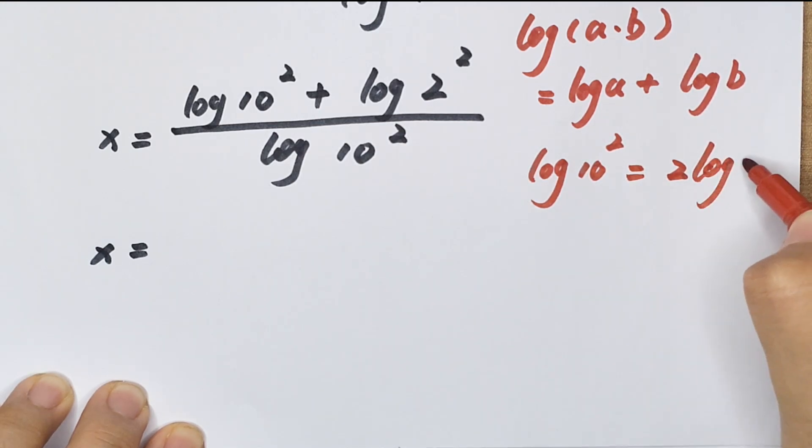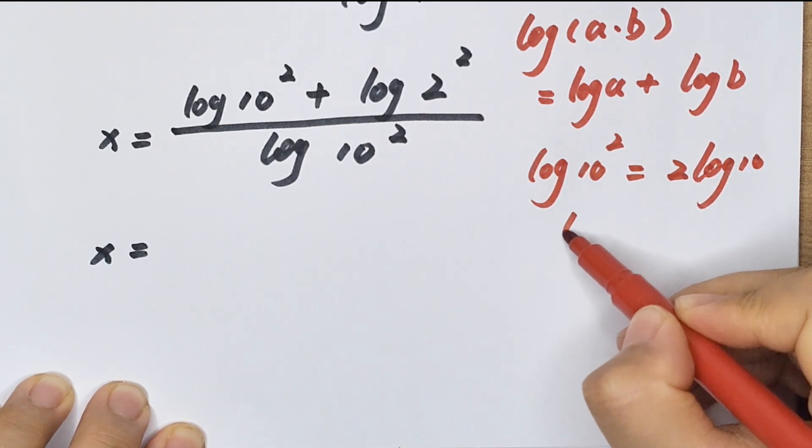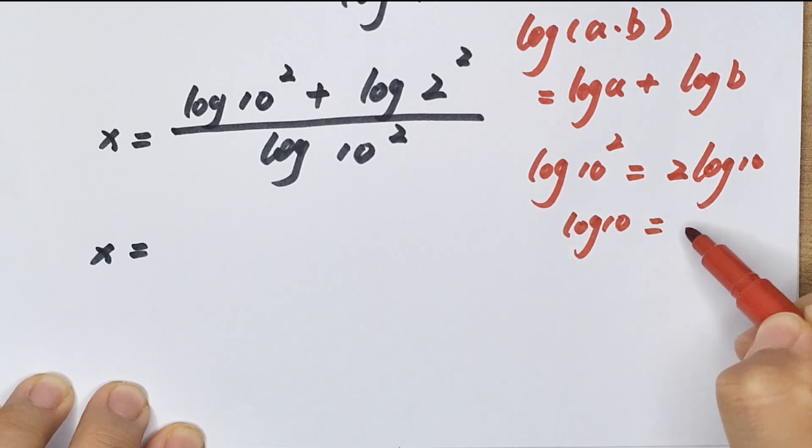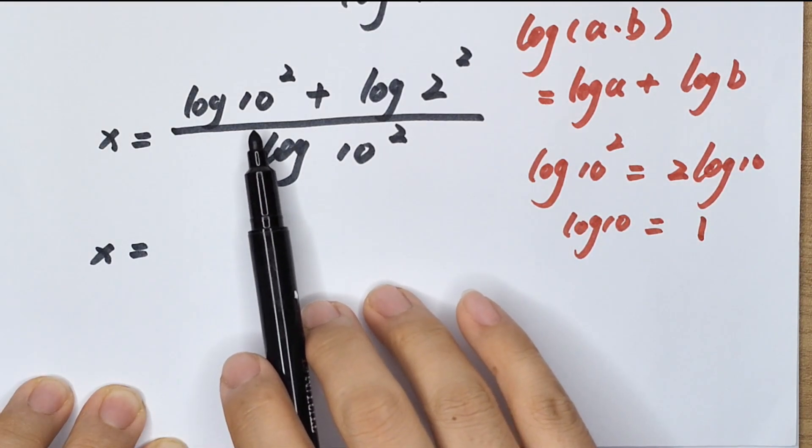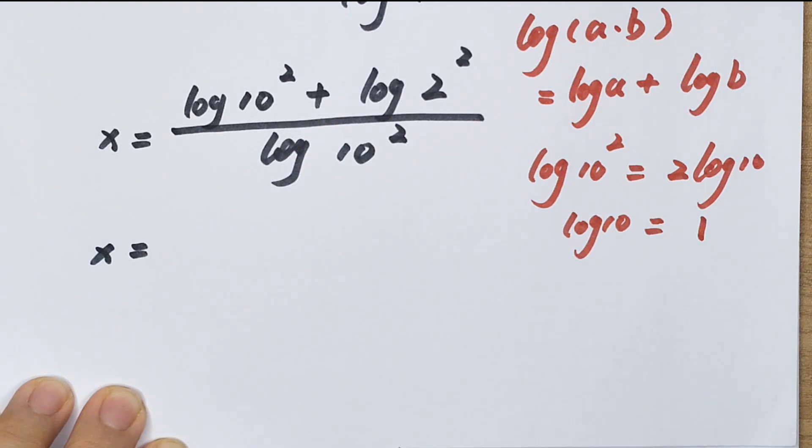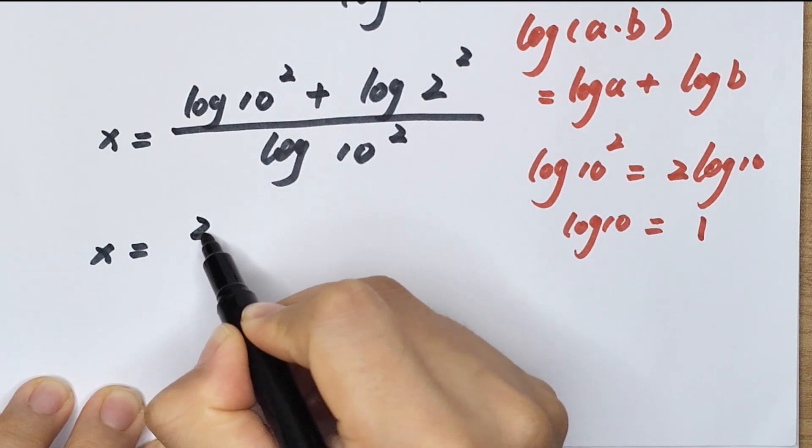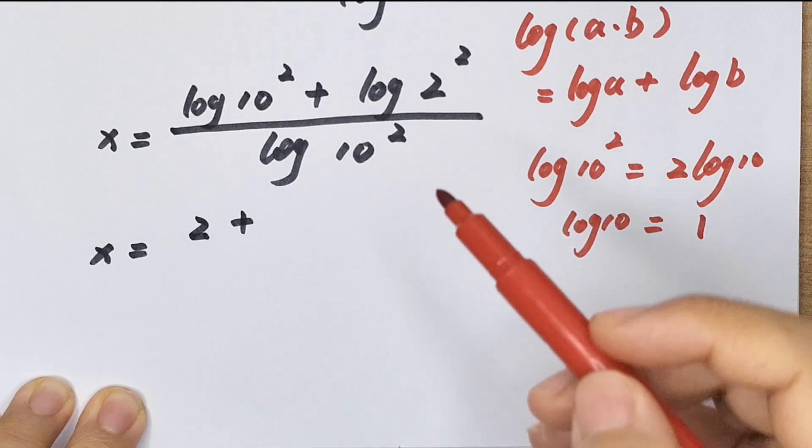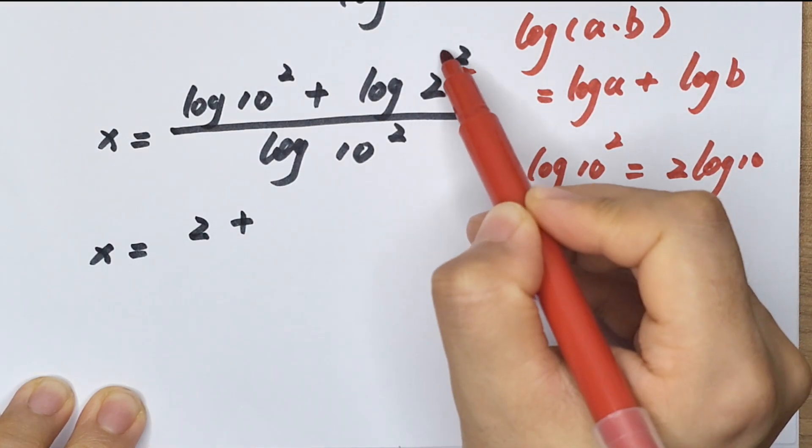Plus, we move it to the front, so 2 plus 2 log(2) over log(10 squared), which becomes 2 log(2) over 2.